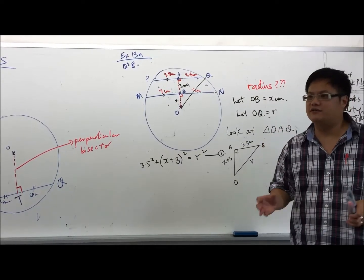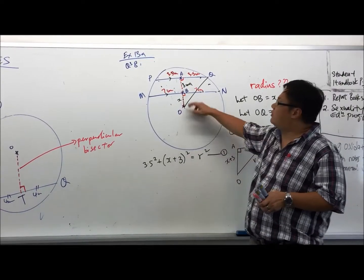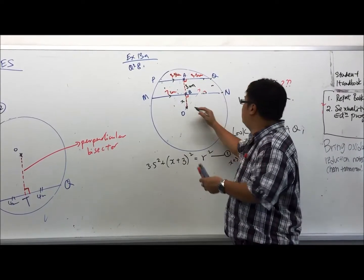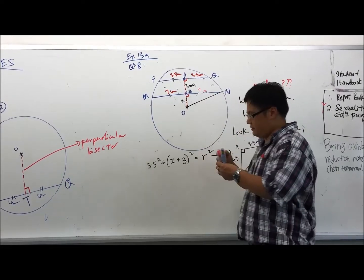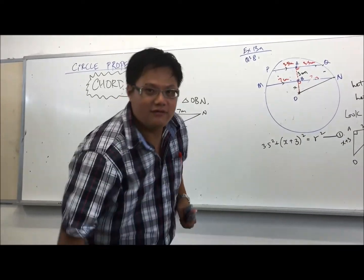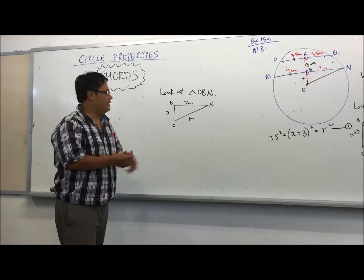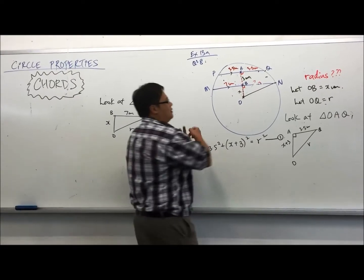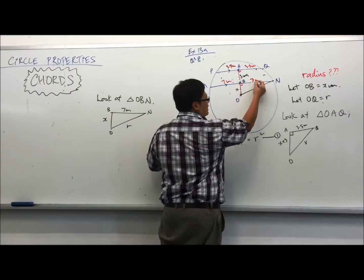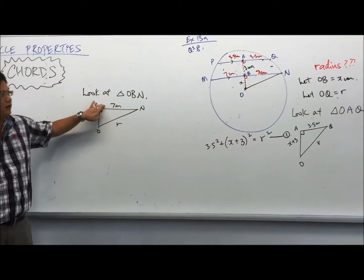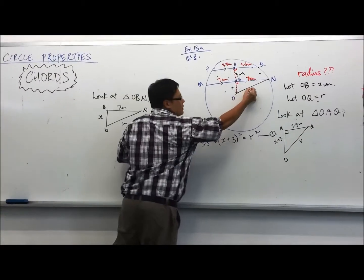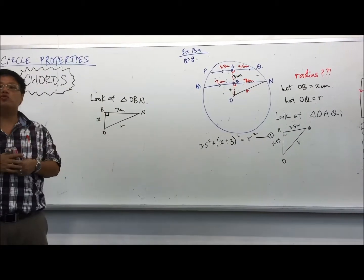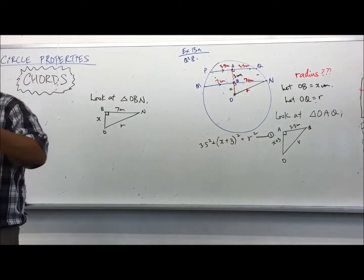Instead of looking at triangle OAQ now, is there another triangle we can look at? OBN. OBF. Paint the picture of OBF. So now we look at triangle OBF. If you look at triangle OBF, OB is x. BF is 7 cm. ON would be your arm. Over here, in this situation, this right here is also a right angle triangle.